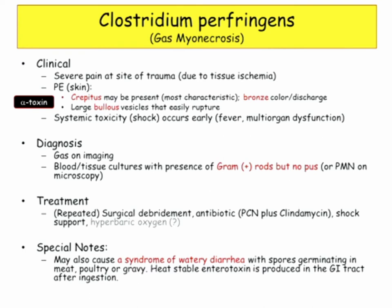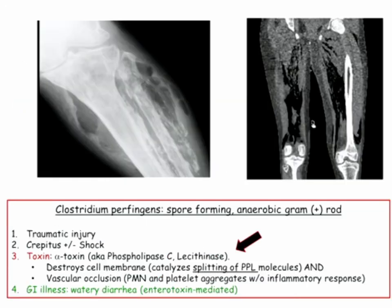C. perfringens also causes watery diarrhea — it makes an enterotoxin that causes diarrhea. So those are the two places we'll see this organism: gas myonecrosis and diarrhea. Summary: gas in soft tissue, traumatic injury, crepitus, the alpha toxin and how it works, and as a sidebar, the enterotoxin.